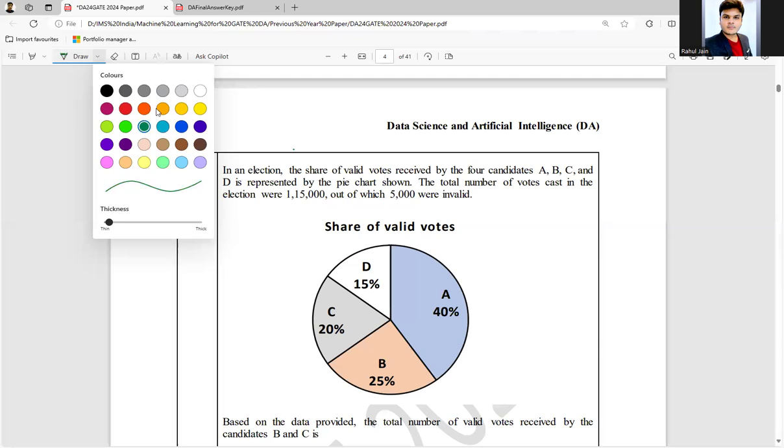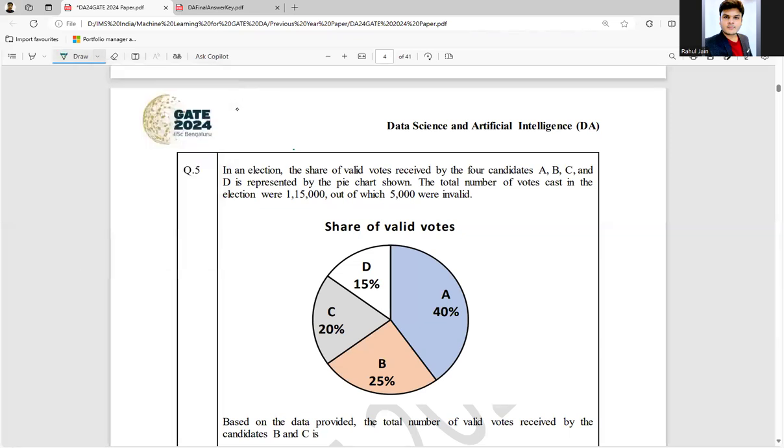The following question was asked in GATE DA 2024. In an election, the share of valid votes received by the four candidates A, B, C, and D is represented by the pie chart shown here. This is the share of valid votes. The total number of votes cast in the election were 115,000, out of which 5,000 were invalid.